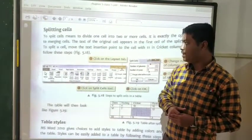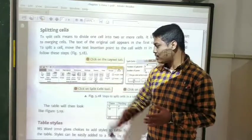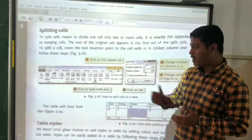In merging cells, we merge two to three cells together. Here we are splitting the cells. Where will we find the option for splitting cells?